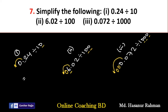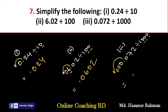So the final answers: 0.24 divided by 10 is 0.024; 6.02 divided by 100 is 0.0602; and 0.072 divided by 1000 is 0.000072. In this way, we can easily complete number seven.